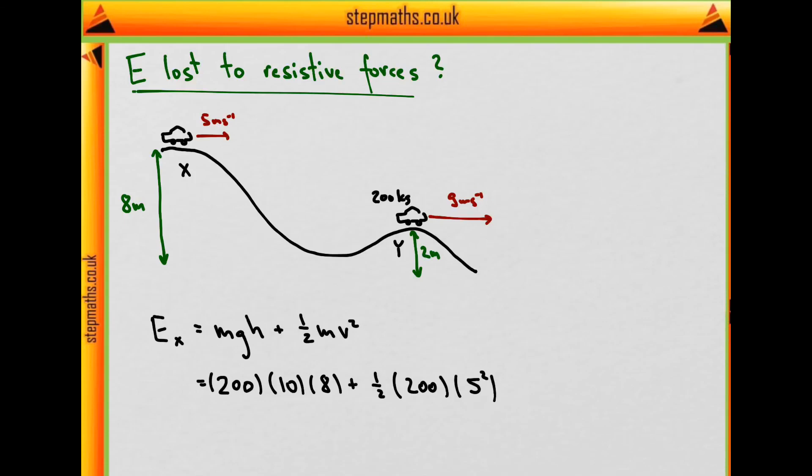This is what we get when we substitute the numbers: 200 kilos, 8 meters, 200 kilos again, and 5 meters per second, which yields 18,500 joules.